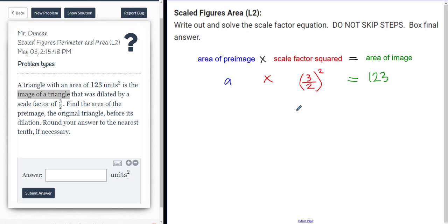So let's simplify this. So I would have A multiplied by 9 fourths is equal to 123. The quickest way to get rid of a fraction is to multiply by its reciprocal. So I'm going to go ahead and multiply by 4 ninths on each side. And that's going to cancel. And I'll have A, which stands for the area of the pre-image, is going to be really equal to 123 times 4 and then divide by 9.